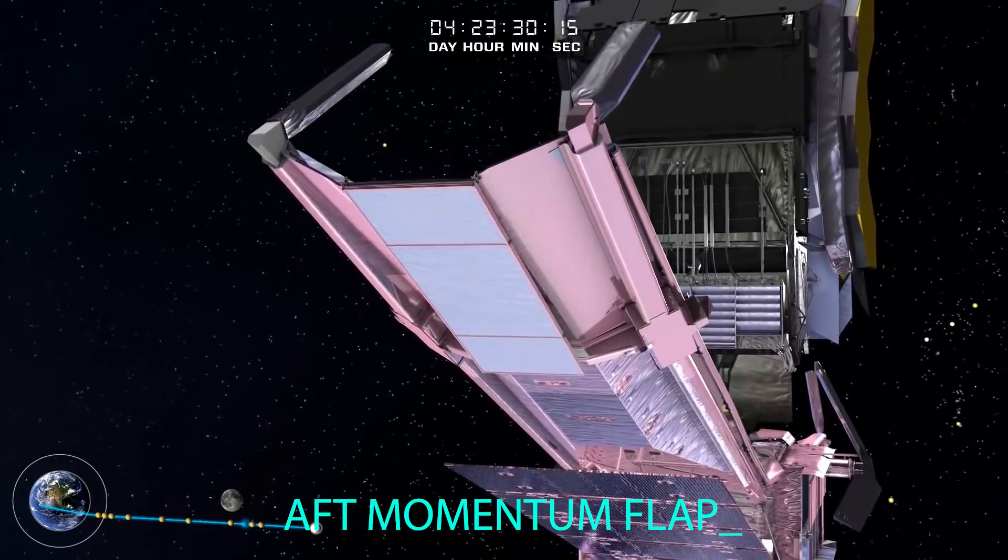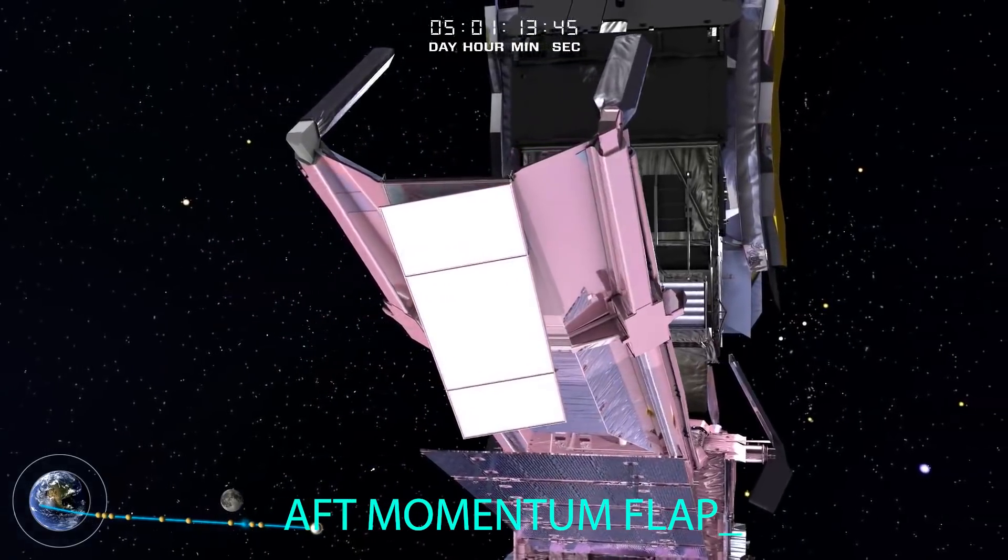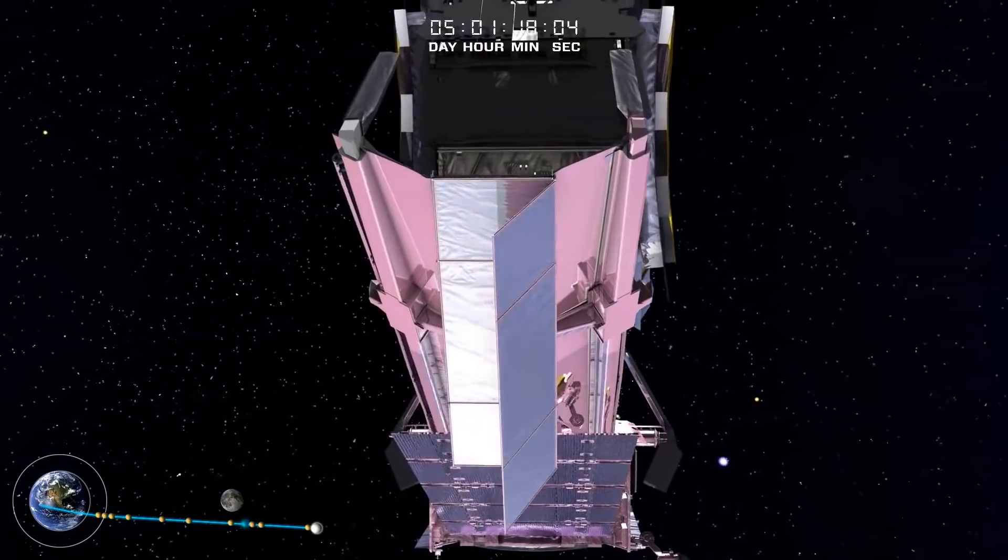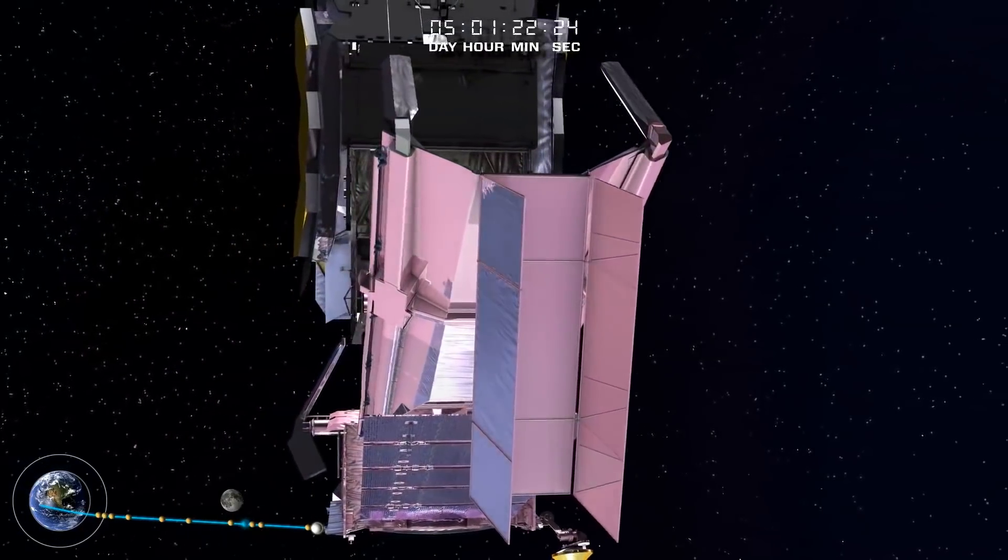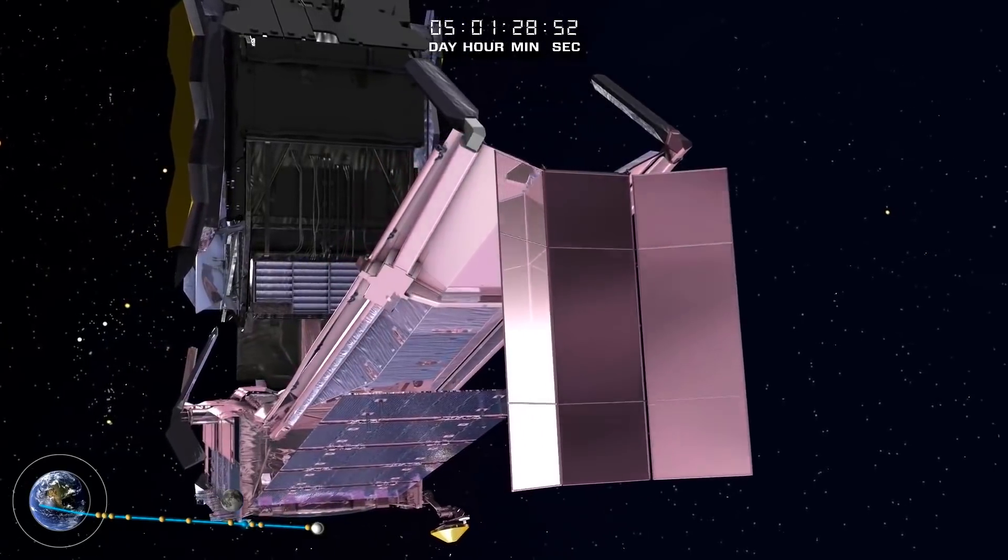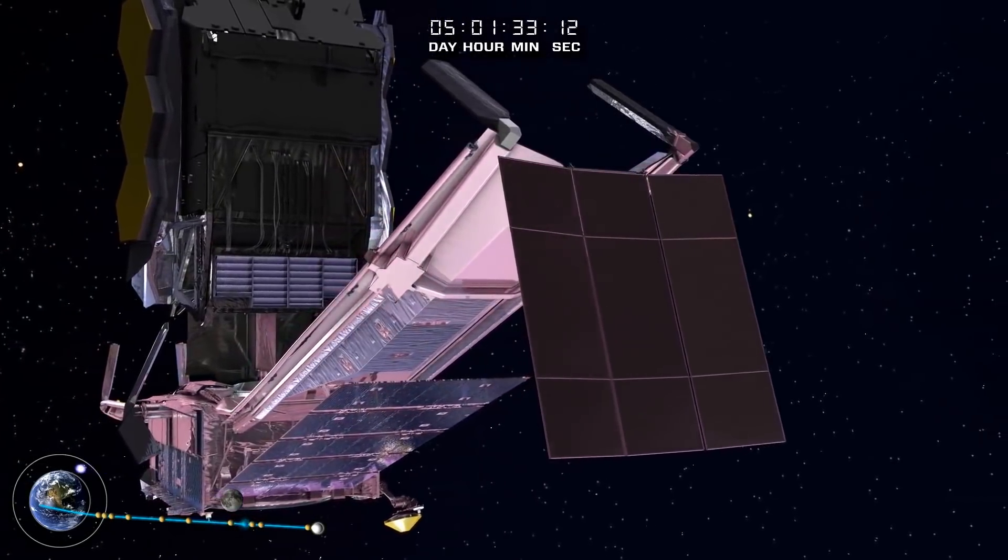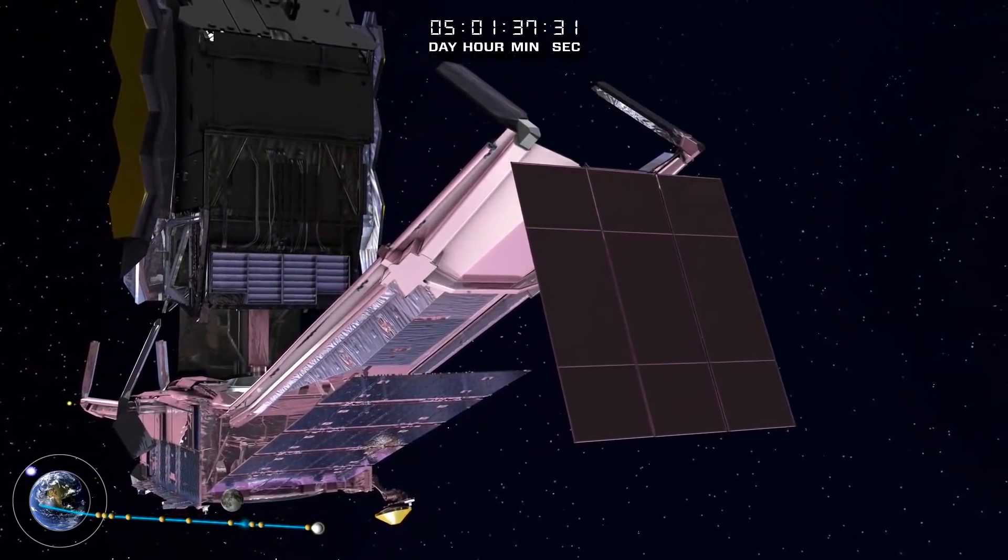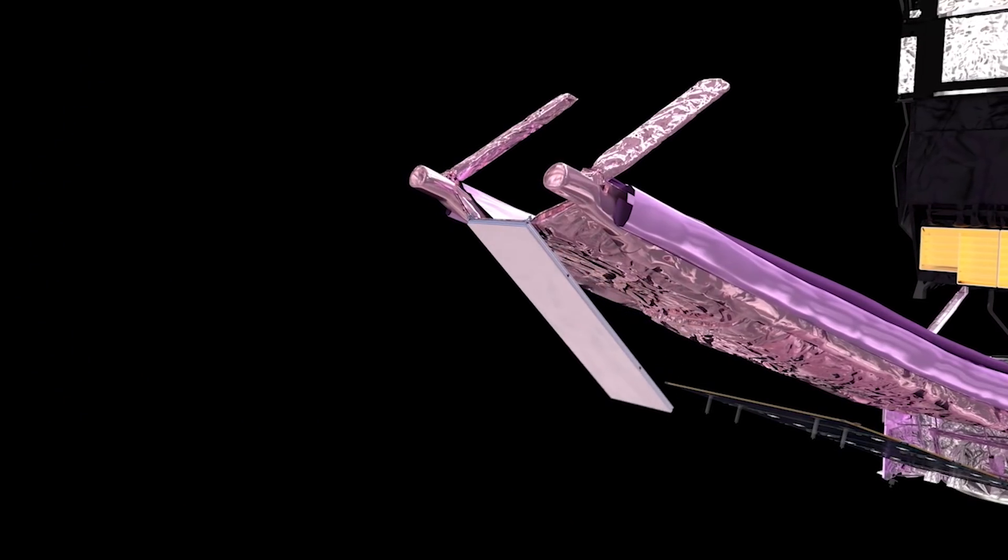Aft momentum flap. The aft momentum flap is used to help offset some of the solar pressure that impinges on the large sunshield. Use of the momentum flap helps to minimize fuel usage during the mission. After releasing hold-down devices, a spring drives the rotation of the aft flap to its final position.